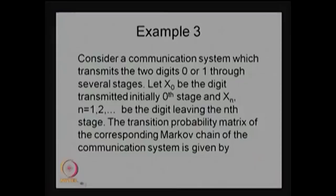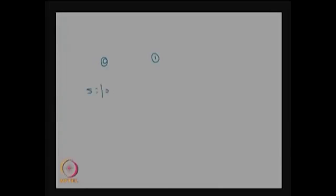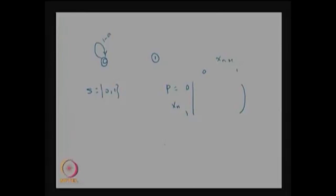Now we find the one step transition probability for the Markov chain via the state transition diagram. The possible states are 0 and 1. The probability that the next step transmission is also 0 is 1-a. The conditional probability that at stage n the transmission was 0 and at stage n+1 the transmission is also 0 is 1-a. The one step transition probability of moving from state 0 to state 1 is a.